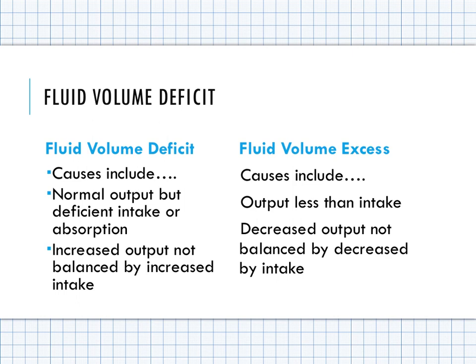Fluid volume excess is caused when output is less than intake, or decreased output not balanced by decreased intake. It can result from many issues such as oliguria due to end-stage renal disease, aldosterone excess as with heart failure, or steroid therapy causing Cushing's syndrome.